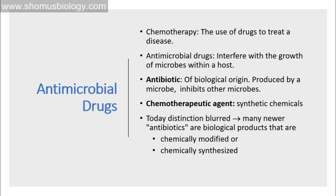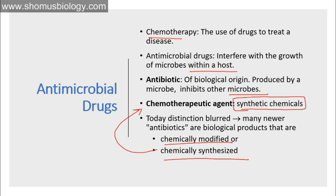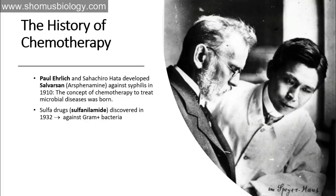So let's begin. Antimicrobial drugs — the term chemotherapy means the use of drugs to treat a disease. Although nowadays chemotherapy is mostly associated with cancer treatment, any kind of drug treatment is technically part of chemotherapy. Antimicrobial drugs interfere with the growth of microbes within a host. The host in this case is a eukaryote and the microbes are prokaryotes, so the drugs are designed to have adverse effects on prokaryotes but not on eukaryotes. An antibiotic is of biological origin — produced by microbes to inhibit other microbes — while a chemotherapeutic agent is a synthetic chemical used to kill microorganisms. Many newer antibiotics are chemically modified or synthesized forms.